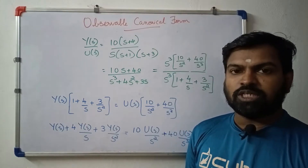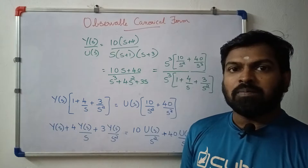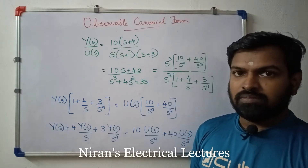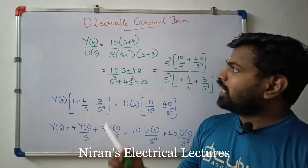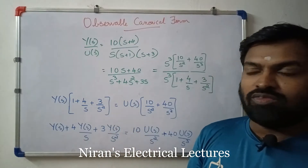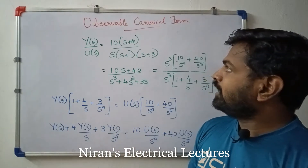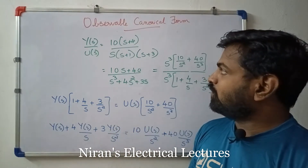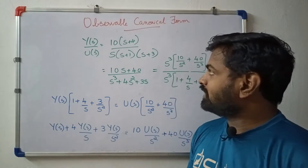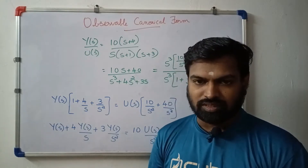This video covers the canonical form. Here is a transfer function: Y(s) is equal to 10 times (s plus 4) divided by s times (s plus 1) times (s plus 3). Here is the transfer function.